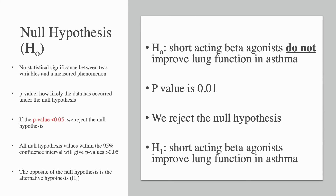The null hypothesis states that there is no statistical significance between two variables and a measured phenomenon. The p-value displays how likely the data has occurred under the null hypothesis. If the p-value is less than 0.05, we reject the null hypothesis. All null hypothesis values within the 95% confidence interval will give p-values greater than 0.05. The opposite of the null hypothesis is known as the alternative hypothesis.